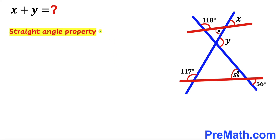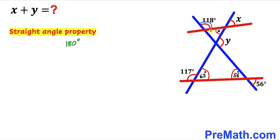Now let's recall the straight angle property — the angle in a straight line is 180 degrees. We can see this whole angle is 180 degrees, and we know this angle is 117 degrees, so this remaining angle has got to be 63 degrees. Furthermore, this whole angle is also a straight angle equal to 180 degrees. We know this angle is 118 degrees, so this remaining angle has got to be 62 degrees.